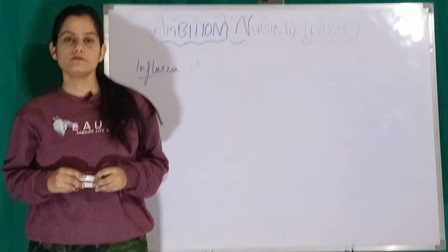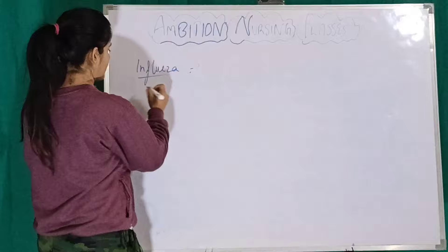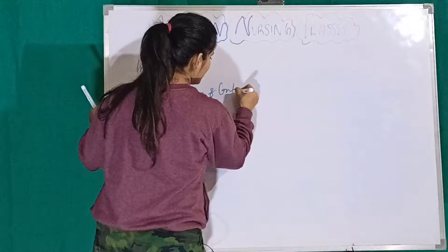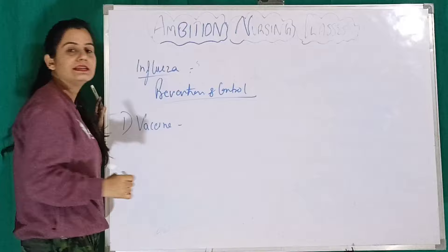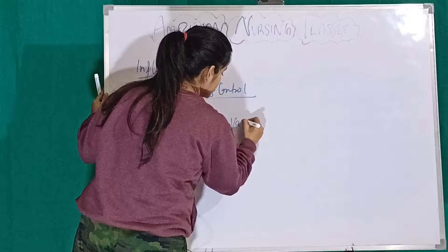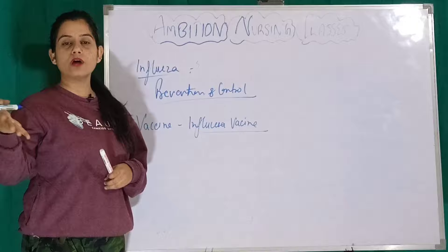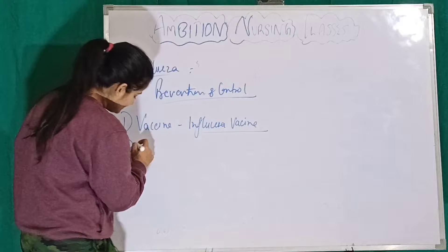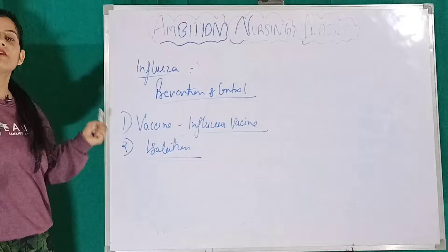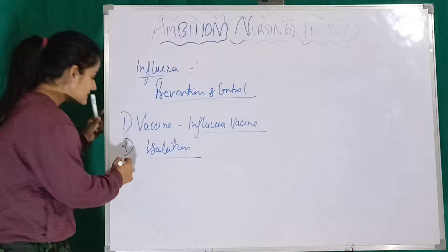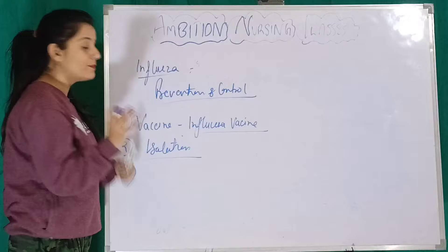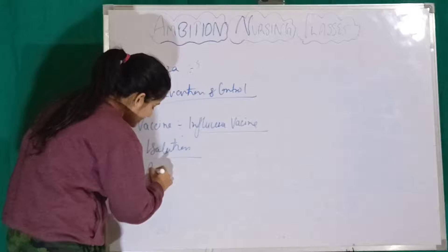So, what can we do in this case? Vaccination. For Influenza, the vaccine is the Influenza vaccine. And this Influenza vaccine's content changes every year — for example, last year it was trivalent, and now this year, 2021, it is called Tetravalent.